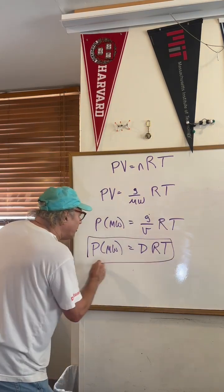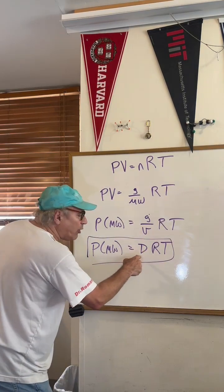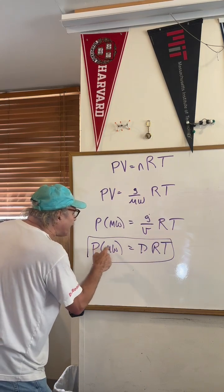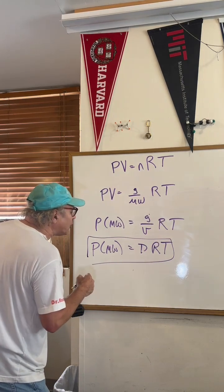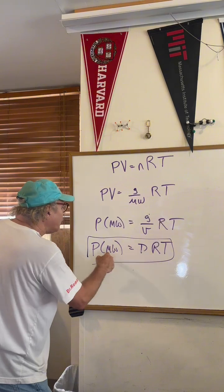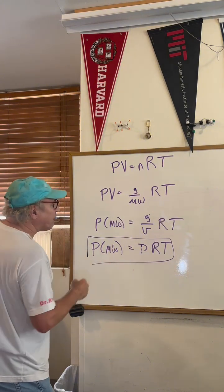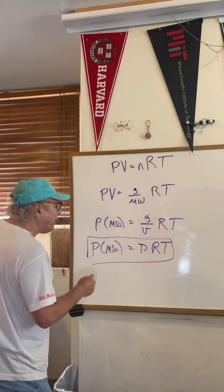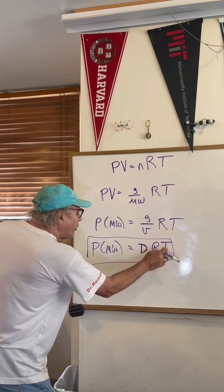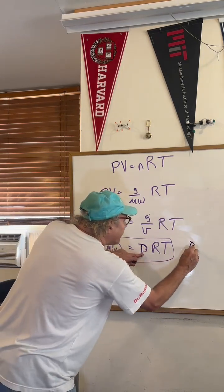And there you have it. The density — I call this the DART formula. DART equals pressure times the molecular weight divided by RT. So if I gave you the density, you can see how density is related to pressure and molecular weight. If I ask you a ratio between density and temperature, they're on the same side.